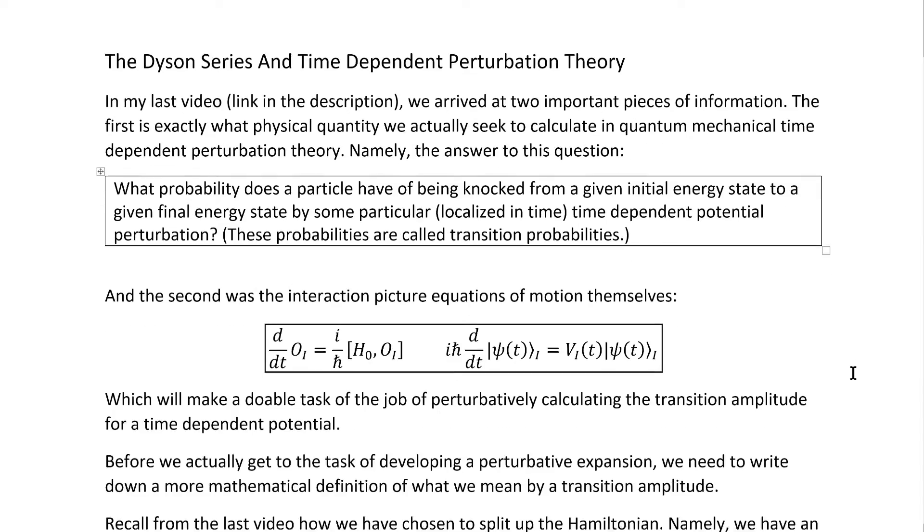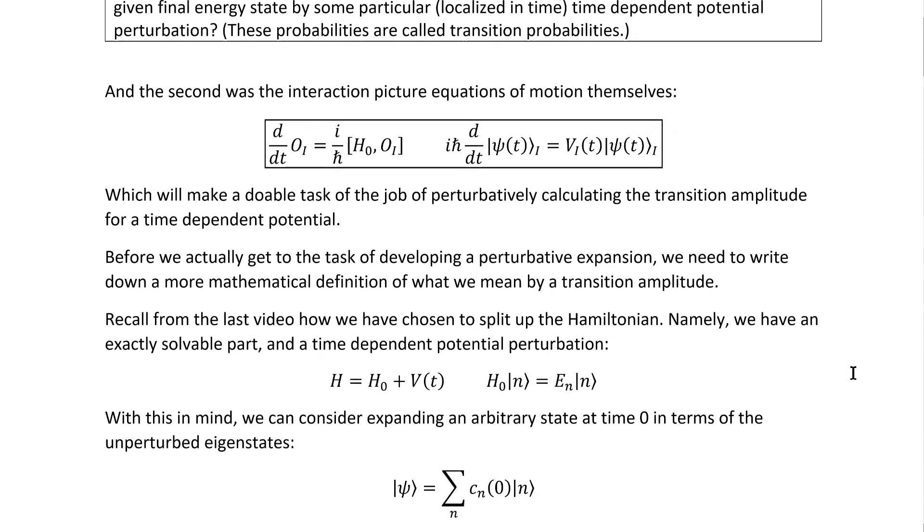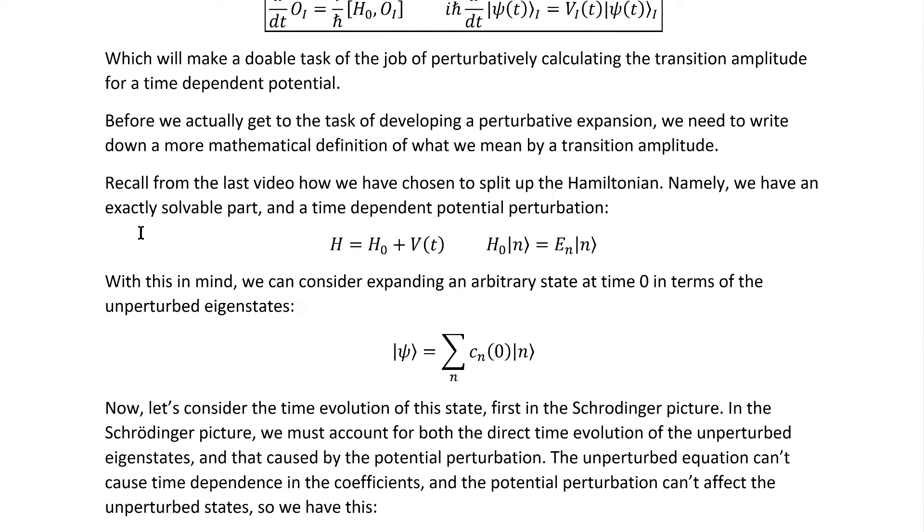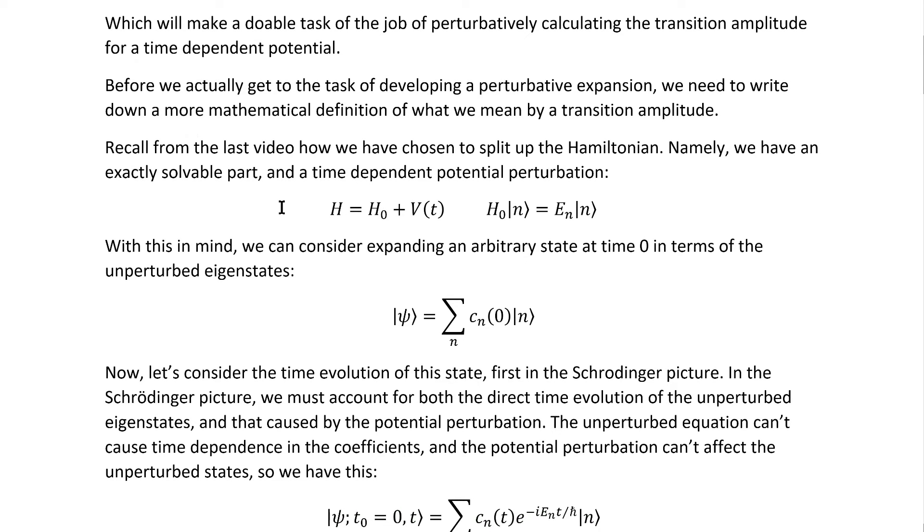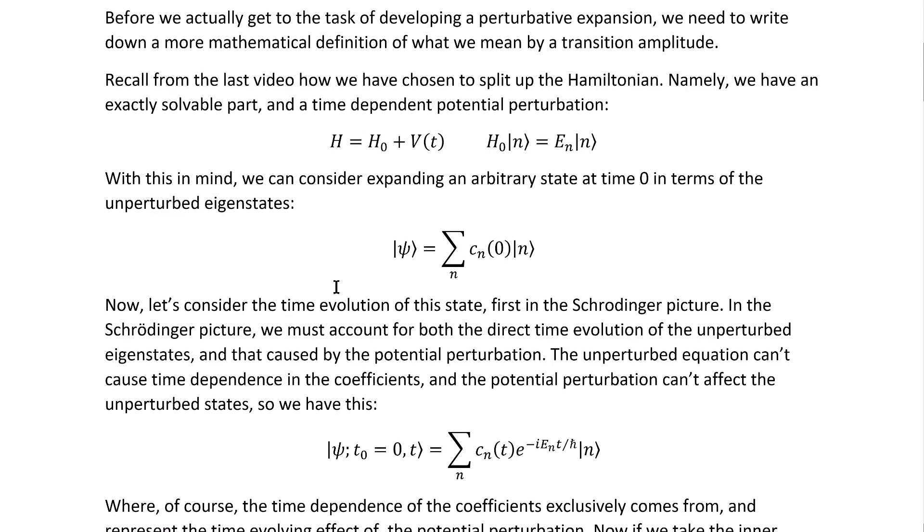This is a nice start, but we need something a bit more specific than those boxed words. Recall from the last video how we have chosen to split up the Hamiltonian. Namely, we have an exactly solvable part and a time-dependent potential perturbation, where I define these unperturbed energy eigenstates. With this in mind, we can consider expanding an arbitrary state at time t equals zero in terms of the unperturbed eigenstates.